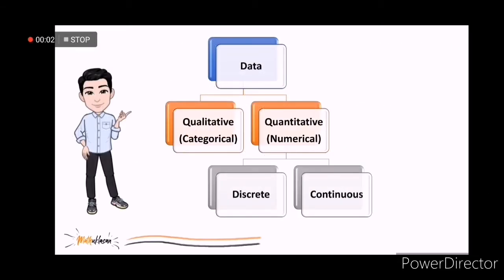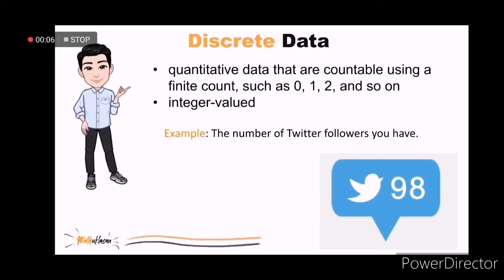There are also two types of quantitative data, discrete and continuous. Discrete data are quantitative data that are countable using a finite count such as 0, 1, and 2. These are often integer valued.